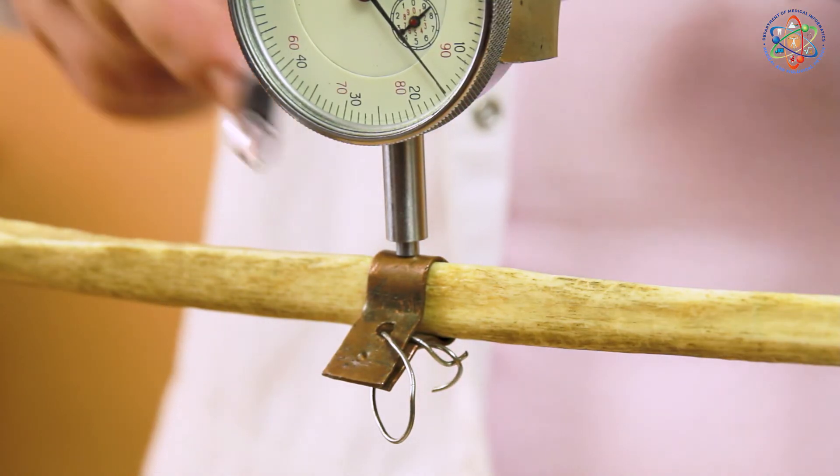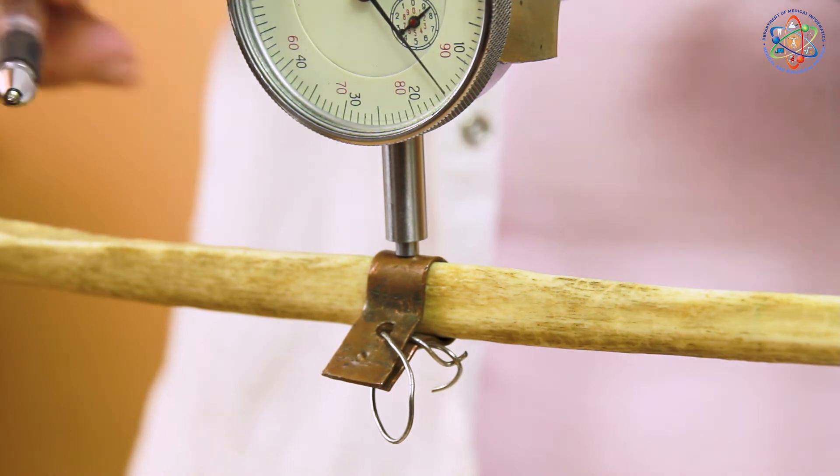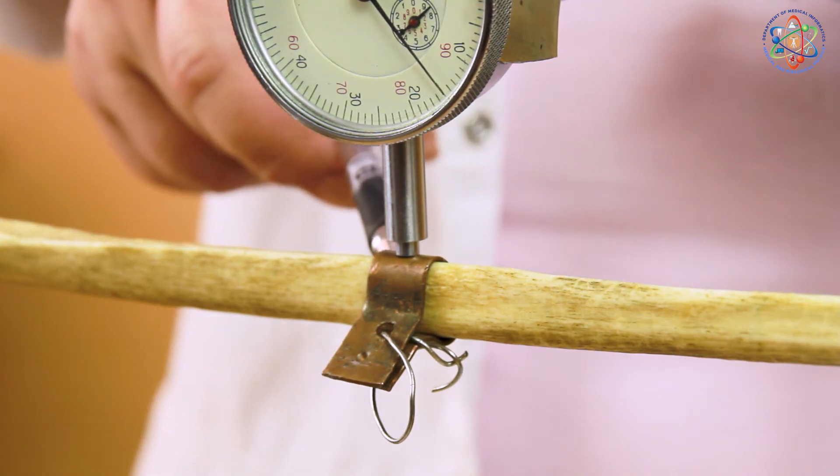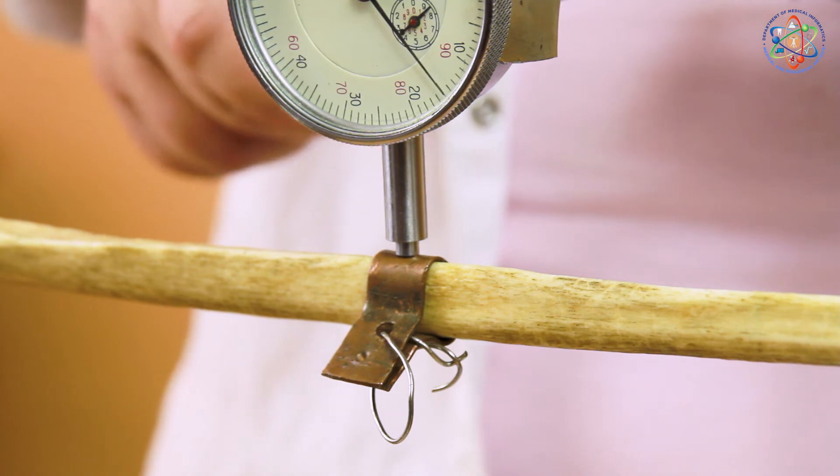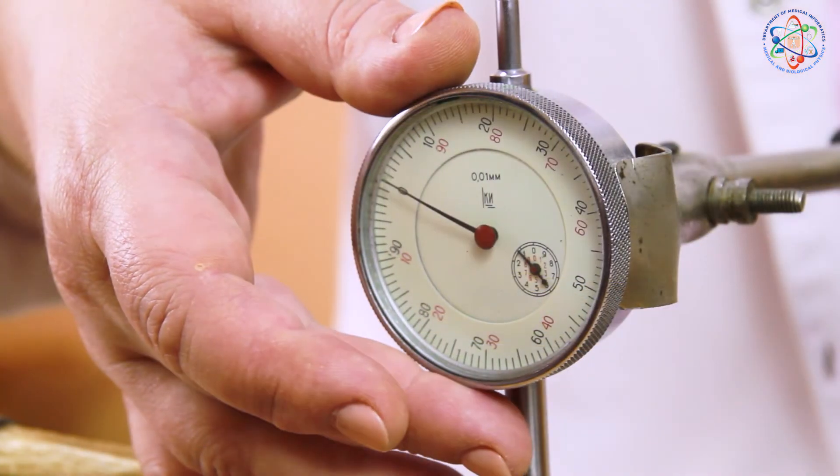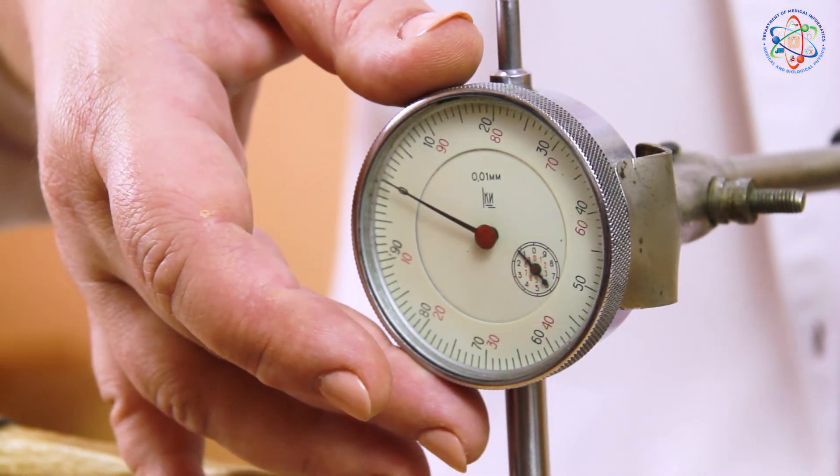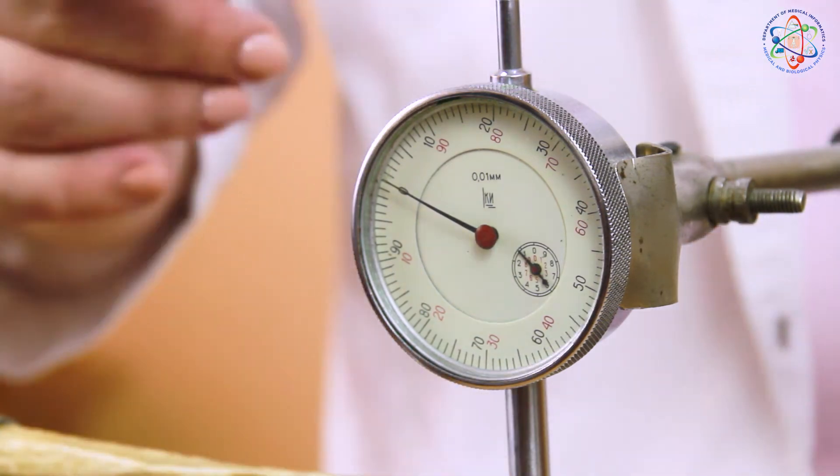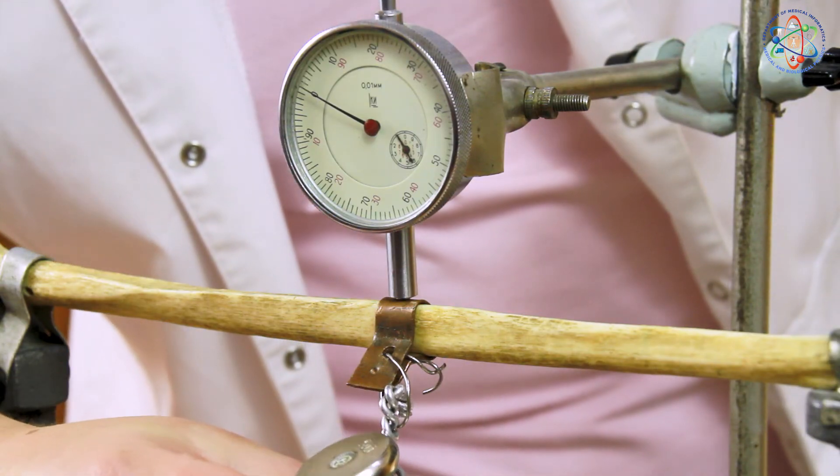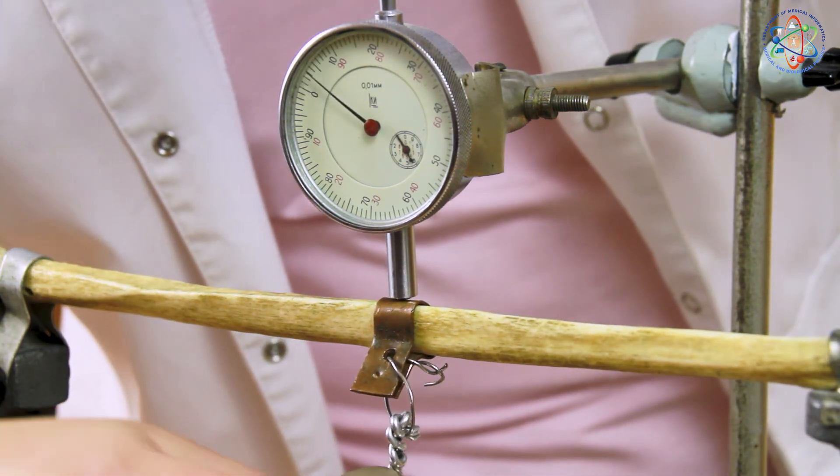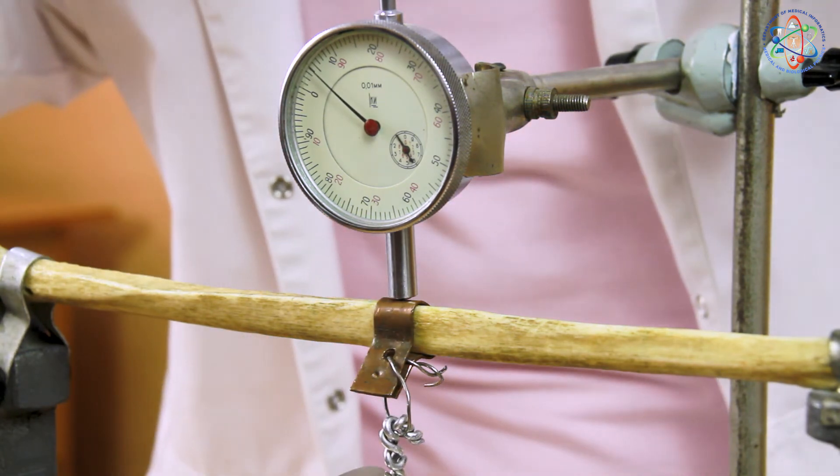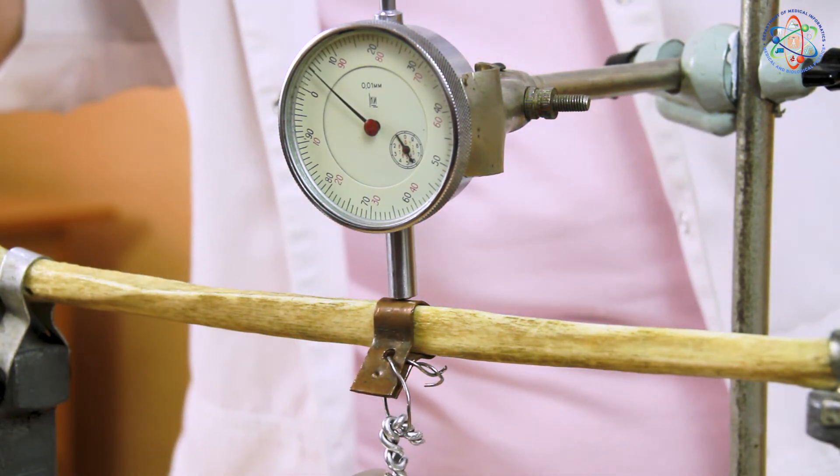Next, we place the dial gauge to the bone in the place of applying the load. In this position, we move the scale to a zero indicator. Next, we apply the load to the bone by applying a weight piece measuring 500 grams.